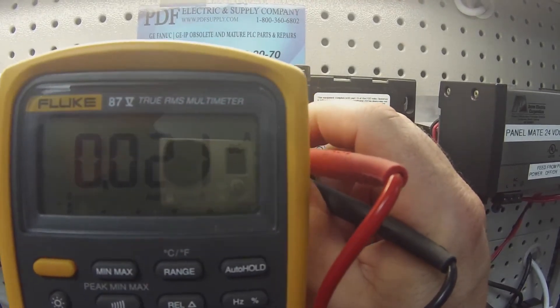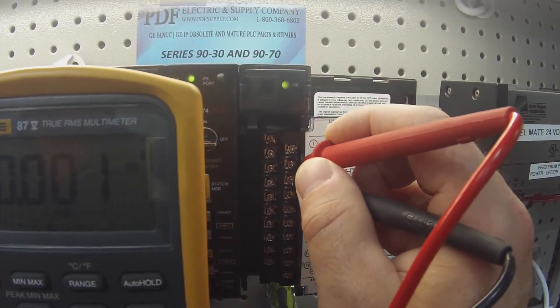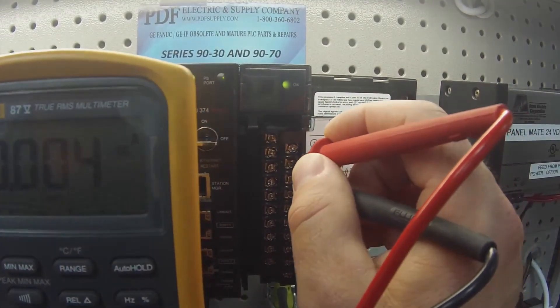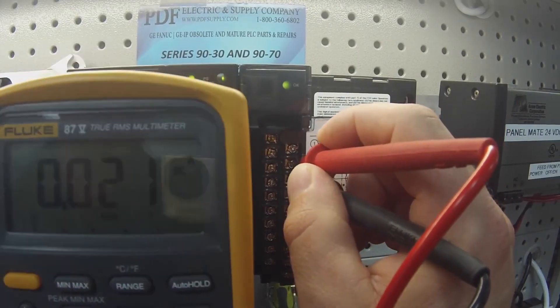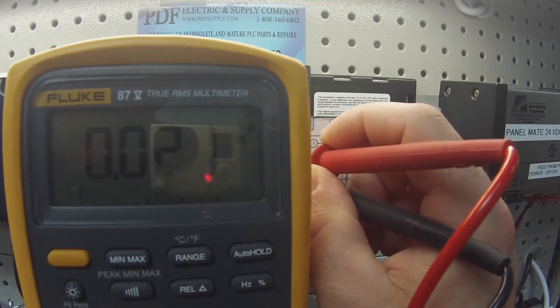I have 21 as you can see here. And output number two or channel number two is four and six. Four is positive, six is negative. That way I get a positive reading. If I have it backwards it's going to give me a negative reading. You don't want to do that.